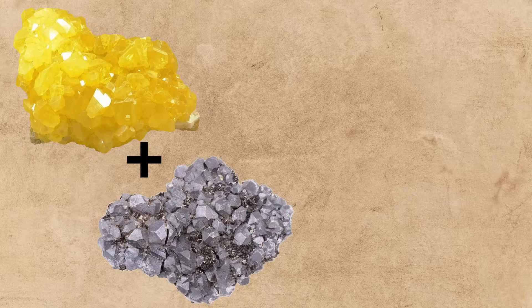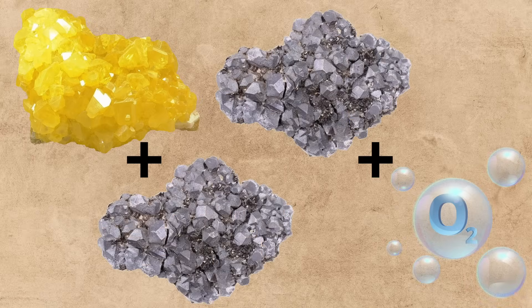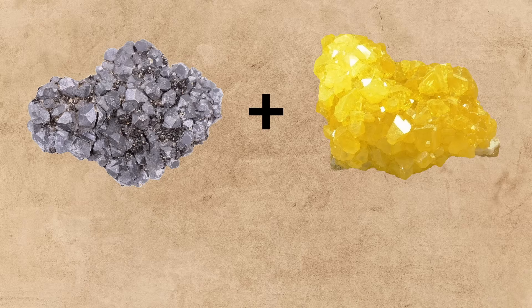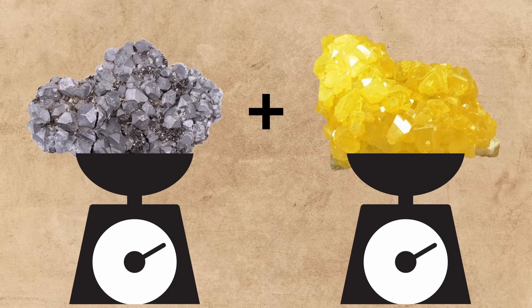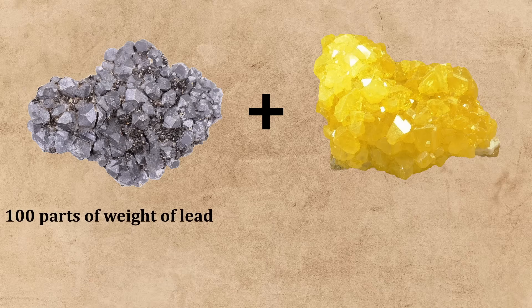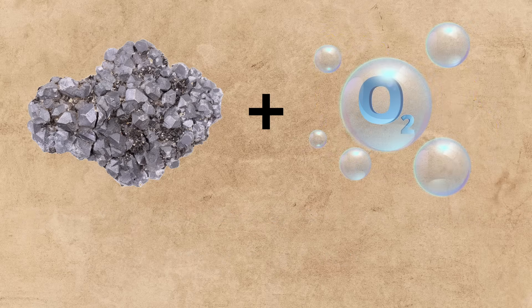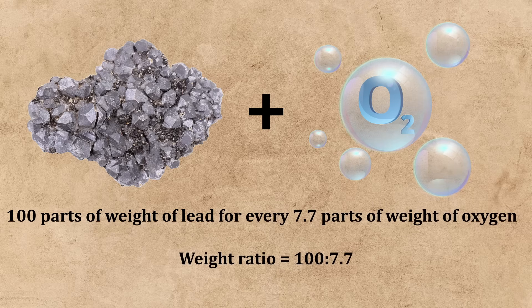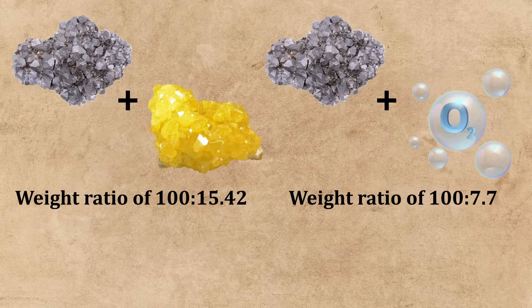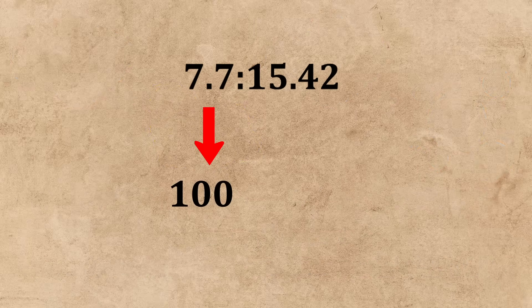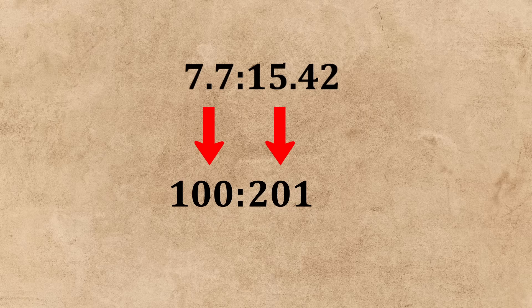To determine its weight, he uses a known molecule of sulfur and lead, and compares it to a molecule of lead and oxygen. From breaking up a set volume of the lead and sulfur compound into two separate volumes of lead and sulfur and weighing the volumes with a sensitive analytical balance, he calculates that for every 100 parts of weight of lead, there are 15.42 parts of weight of sulfur. From breaking up a compound of lead and oxygen, he calculates that for every 100 parts of weight of lead, there are 7.7 parts of weight of oxygen. He then uses the transitive property to say that for every 7 parts of weight of oxygen, there are 15.42 weights of sulfur. Changing this ratio to set oxygen at its standard weight of 100 atomic mass units, sulfur has a weight of 201 atomic mass units.